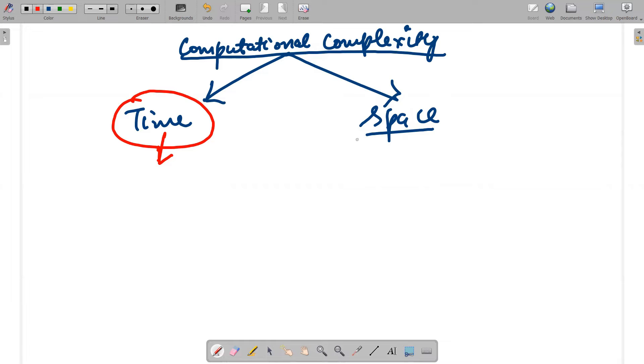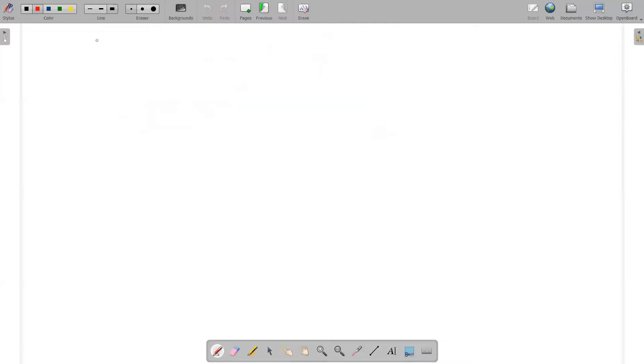I will take a particular example regarding how time and space complexity trade-off actually happens. So we'll take one example. Let's say I'll talk about swapping of two numbers.